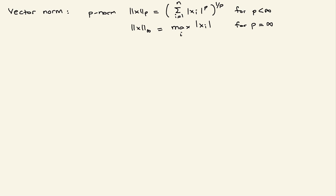A special and widely used norm is the 2-norm, ||x||_2, which is the square root of the sum from i=1 to n of xi squared. You can also write this as the square root of x-transpose times x. This special case is also called the Euclidean norm.